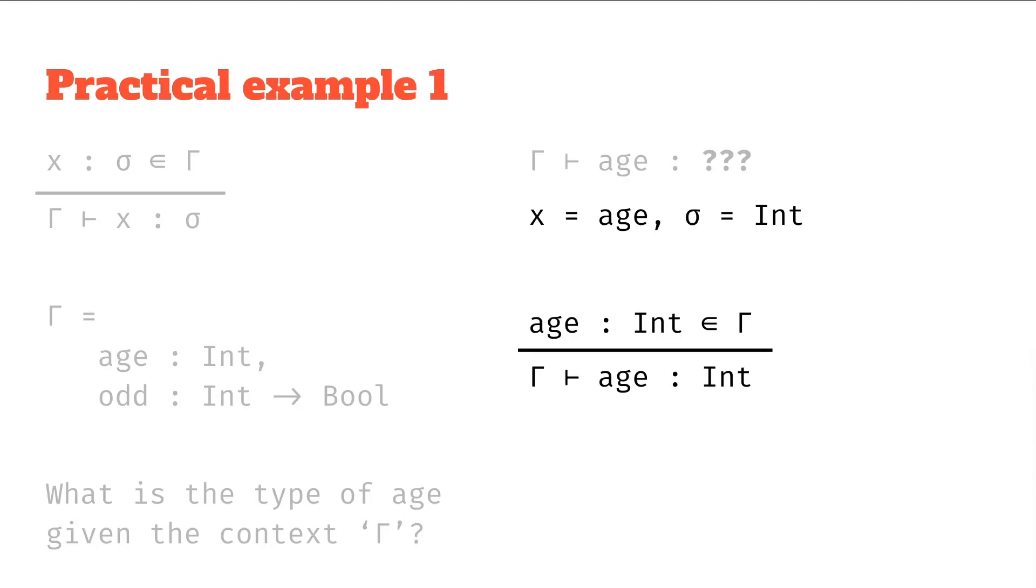And for this to hold, we need the premise to hold, remember, it's an if then. So let's think about this, is age has type int in the context? Well, if we look at the context on the left, yeah, age has type int is in the context.